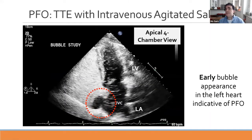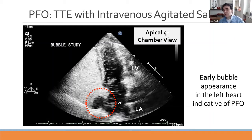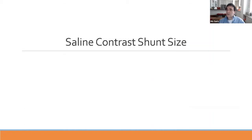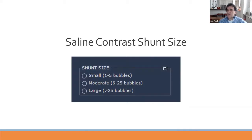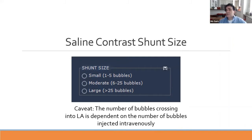This is a frozen image. You often see negative contrast in the right heart because the injection is done through the arm, so bubbles come through the superior vena cava while the inferior vena cava remains bubble-free, creating an echo-free space in the right atrium. The size of the shunt can be quantified: one to five bubbles is small, six to 25 is moderate, and more than 25 is large—though the number depends on the volume injected.